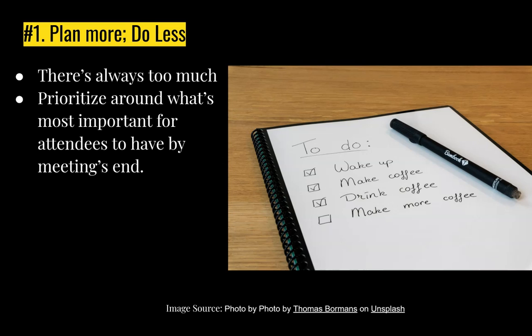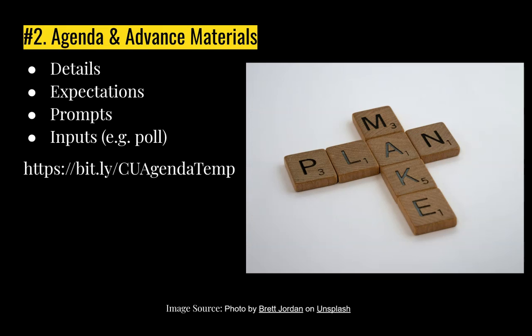The first thing I always recommend is plan more, do less. Identify all the things you want to do in a meeting, and then recognize that in a one-hour or even hour-and-a-half meeting, you're probably not going to get to half of them — depending on how long that list is, maybe not even a quarter. Prioritize what's most important for attendees to have by the end. The more people you have, the less you'll probably get done.